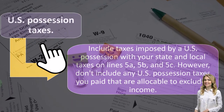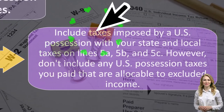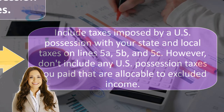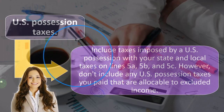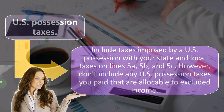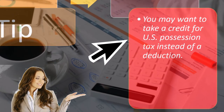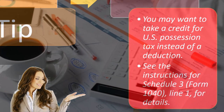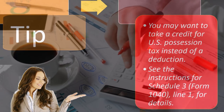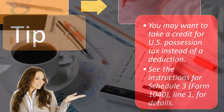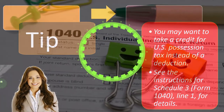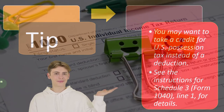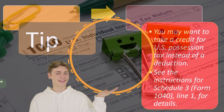The safe harbor applies if you meet these conditions: you made a cash contribution to an entity described in section 170C; in return, you received a state or local tax credit; and you must reduce your charitable contribution amount by the amount of the state or local tax credit received. To the extent you apply the credit to offset your state or local tax liability in a subsequent year as permitted by law, you may treat this amount as state or local tax paid in the year the credit is applied. For more information, see Treasury Regulation 1.164-3J. U.S. Possession Taxes should be included with your state and local taxes on lines 5A, 5B, and 5C — however, don't include any U.S. Possession Taxes allocable to excluded income. You may want to take a credit for U.S. Possession Tax instead of a deduction. See the instructions for Schedule 3, Form 1040, Line 1 for details.